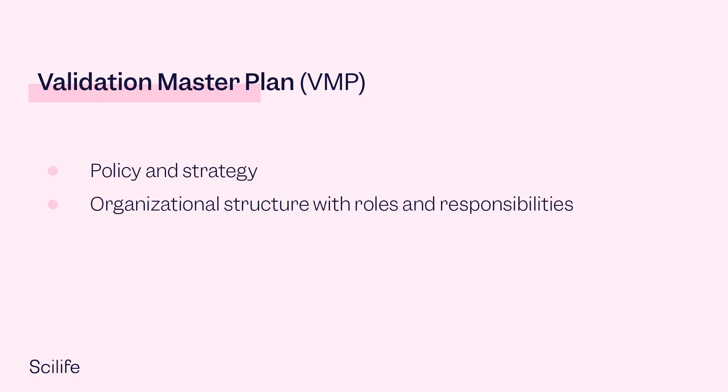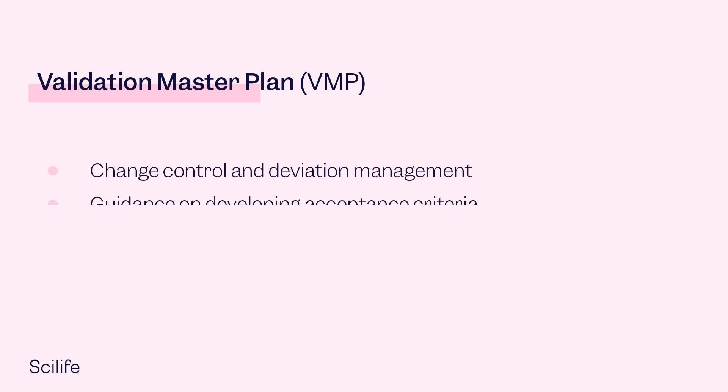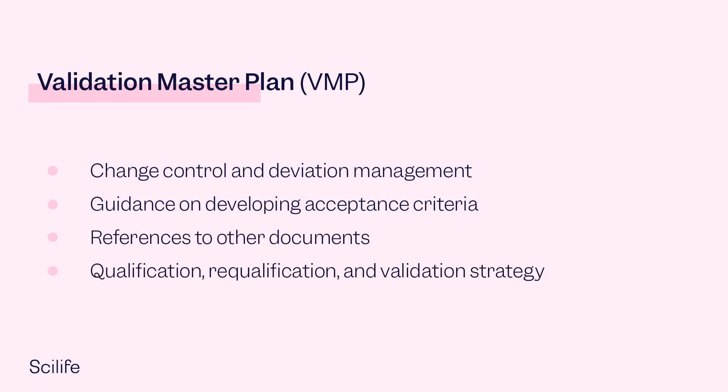A good VMP should include the following regarding validation and qualification. This includes a validation strategy using a life cycle approach, as well as a summary of facilities, equipment, systems and processes included in the validation program at the manufacturing site or globally and their validation status.